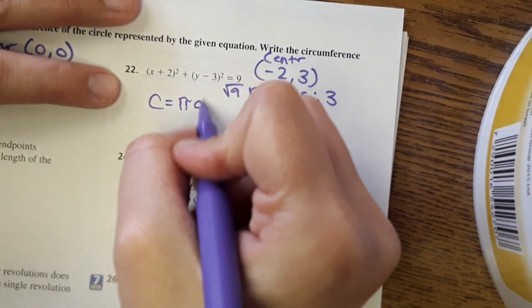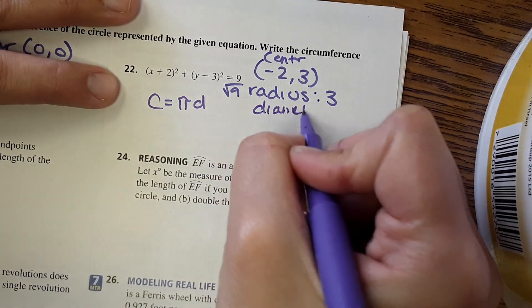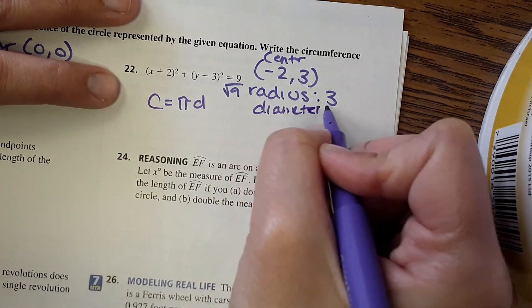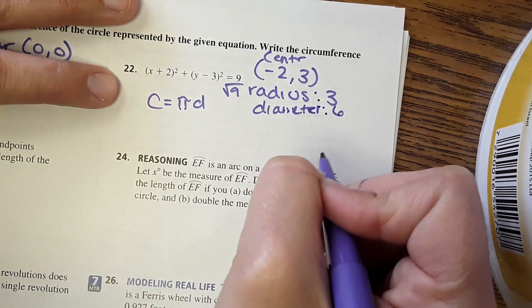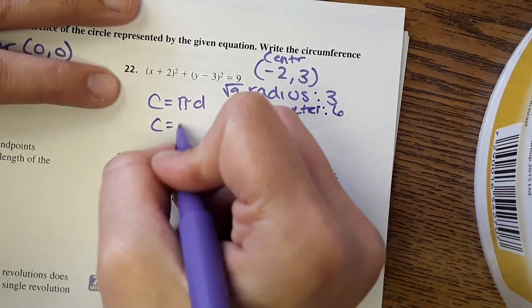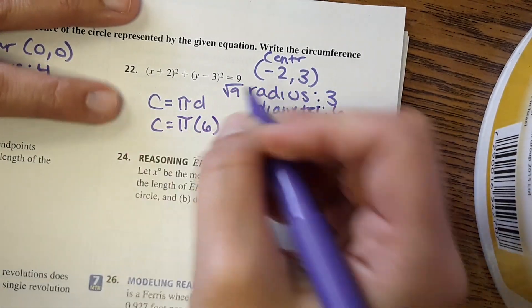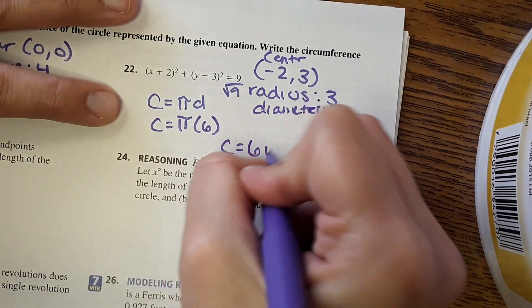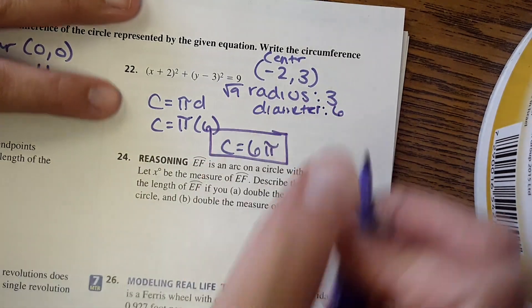Then for circumference, pi times diameter. Diameter would then be 8, or I mean, sorry, 6. Diameter would be 6, double the radius, so pi times 6, which circumference is 6 pi. It says to leave it in terms of pi, so we're good.